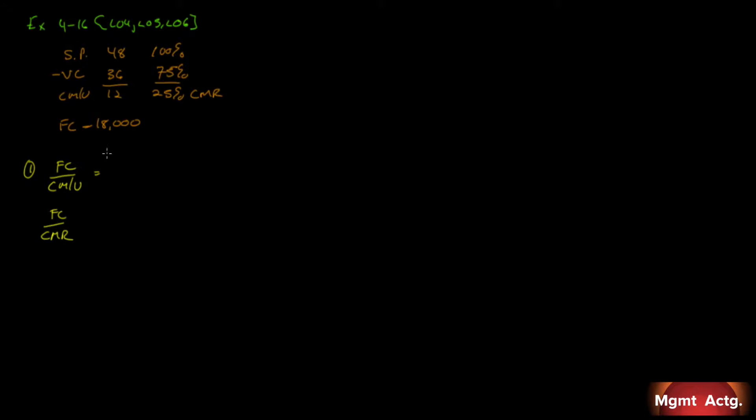Because that's how we get breakeven, right? We just got to cover our fixed costs. We got to make enough contribution margin to cover our fixed costs. So, if our fixed costs are $18,000 and we make $12 for every single one we sell, we must breakeven at 1,500 units.